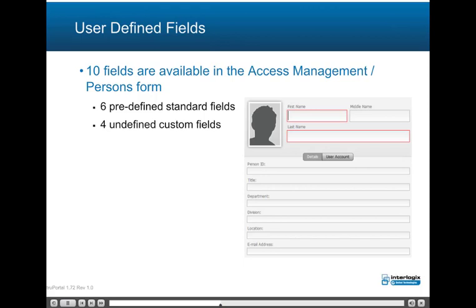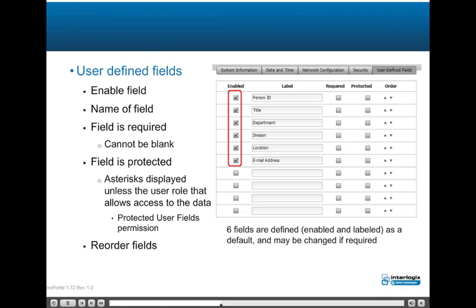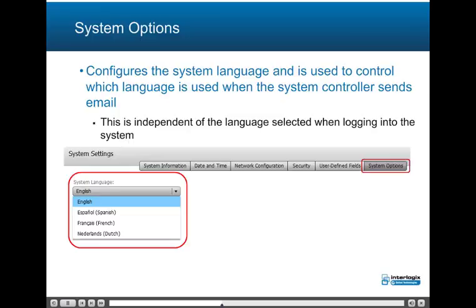Ten total fields are available in the Access Management/Persons form: six pre-defined standard fields and four undefined custom fields. User-defined fields may be disabled or enabled, named, configured as a required field, and protected by applying asterisks. Protected field data may be displayed if the protected user field's permission in User Roles is set to allow access to the data. The fields may be reordered. System options configure the system language used when the system controller sends email, which is independent of the language selected when logging in.